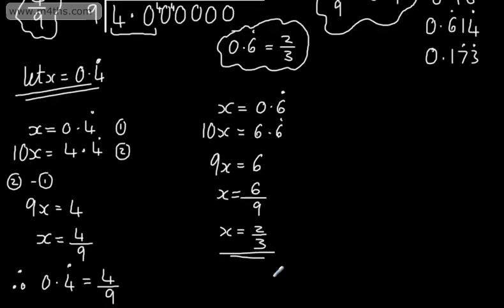So we can say, therefore, at this stage right now, we should see that 0.6 recurring is equal to 2 thirds as a simplified fraction.